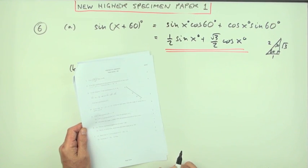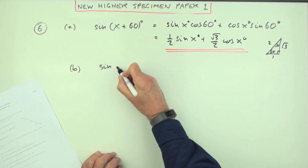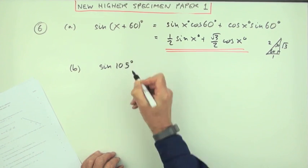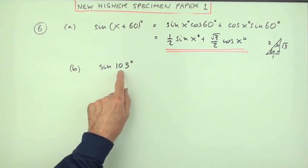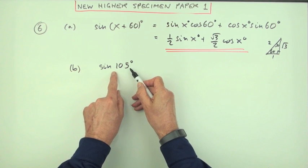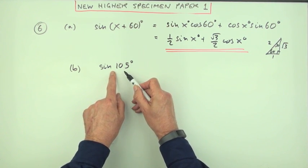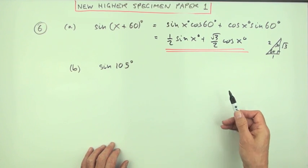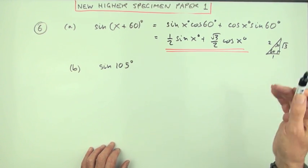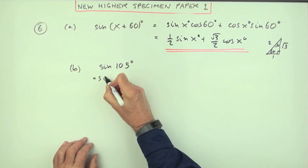Part b, hence or otherwise determine the exact value of the sine of 105 degrees. Now you always used to get a wee question like this in the Higher long ago, on its own without any preamble. And the way you would get exact values would be by breaking the angle up into the sums or differences of ones that you know. And the ones that you know are the 30, 60, 90, and 45. So what combination can I make that up from?